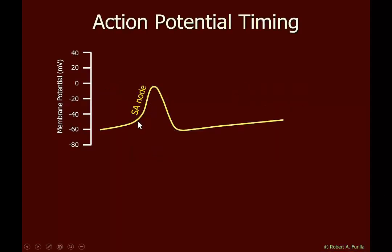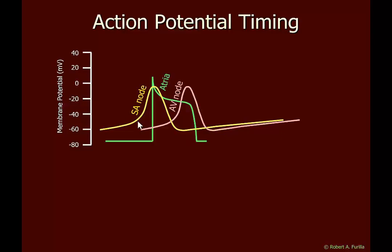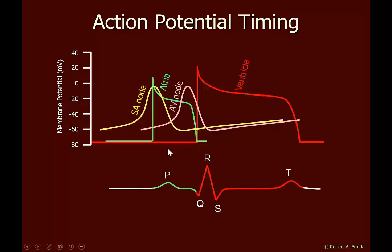We cannot record the SA nodal electrical activity on surface electrodes — it's much too weak for that. However, the SA node triggers the atria to contract. The electromyogram produced by atrial contraction is visible on an electrocardiogram. This is followed by AV nodal activation, which is then followed by ventricular action potential. On the electrocardiogram, atrial contraction is seen as the P wave. Ventricular contraction is seen as the QRS through the T wave. Repolarization begins the T wave and then we're back to rest again.